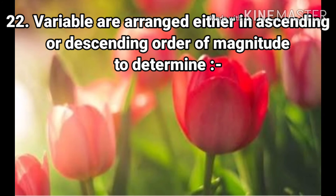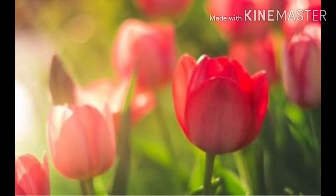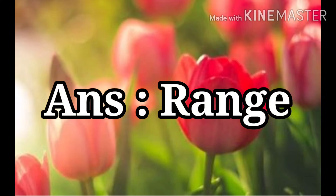Question 22: Variables are arranged either in ascending or descending order of magnitude to determine. The options are Mean, Mode, Median, and Range. The answer is Median.